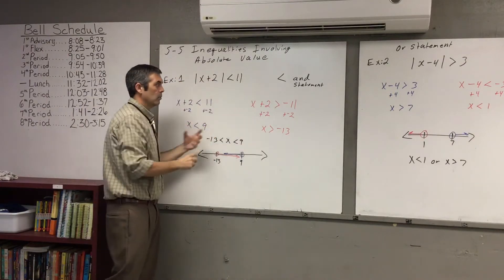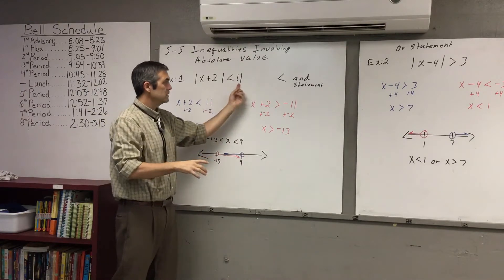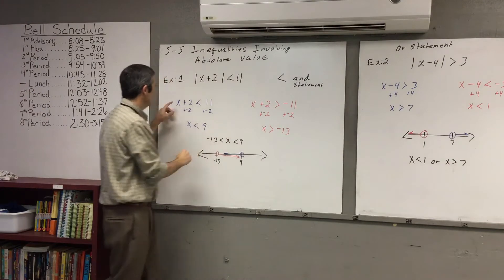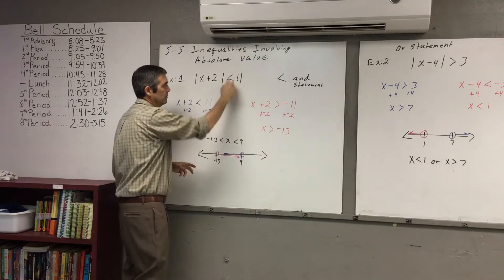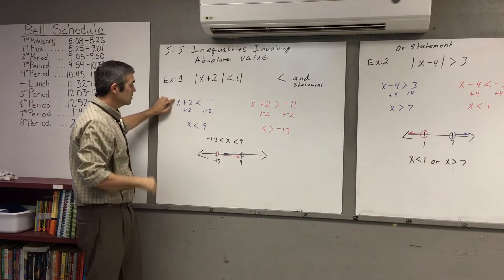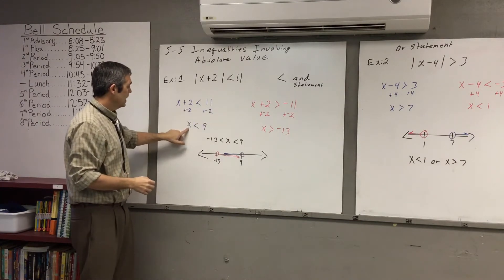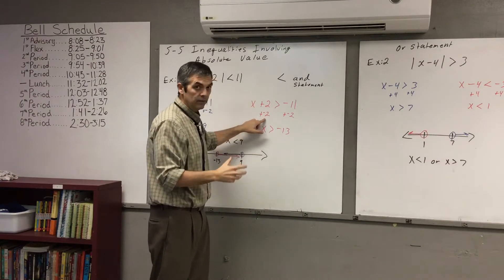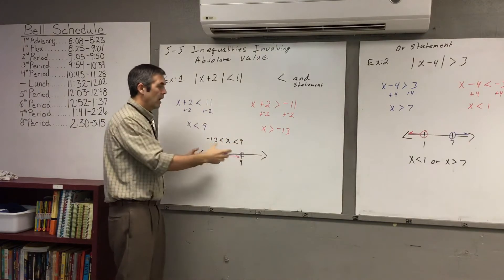When we split this, remember you take the original expression: x plus 2 is less than 11. But you also want the opposite, and when you take the opposite, you flip that inequality. So you end up with x plus 2 is less than 11, and x plus 2 is greater than negative 11 — we took that 11, changed the sign, and flipped the inequality. Solving: add negative 2 to both sides, x is less than 9. Then solving the other side: add negative 2 to both sides, x is greater than negative 13.